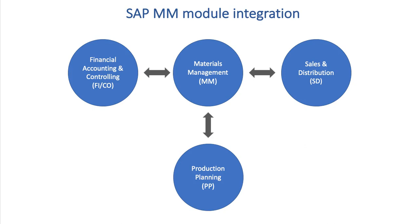Finally, materials management integrates with finance and controlling, or the FICO modules. Purchasing activities provide an excellent example of this. Information from purchase orders flows through to accounts payable to pay suppliers for goods. Also, every inventory posting flows through to a general ledger account.